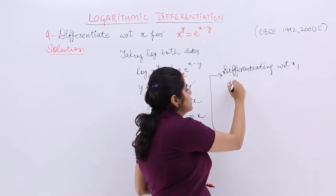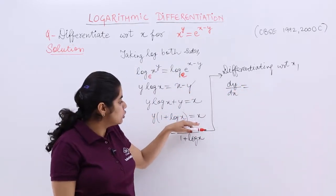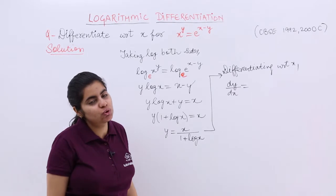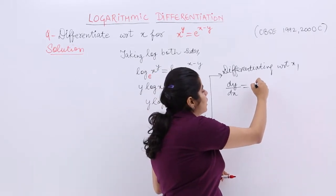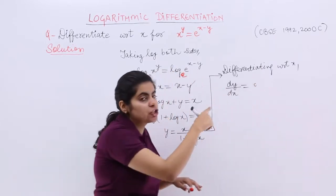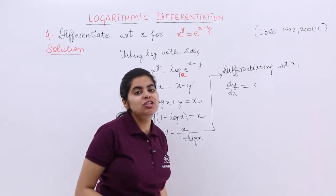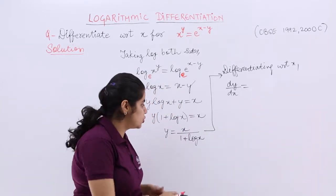What does it become? Y is here. So it becomes dy by dx is equal to. Now since it is numerator upon denominator, so the quotient rule. So it is u dash v. If u is the numerator, differentiating means u dash v means taking out the differentiation of the numerator. So differentiation of x is 1.